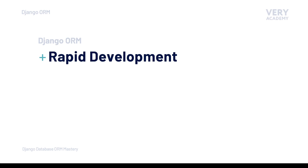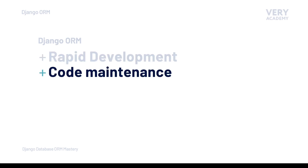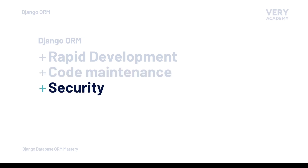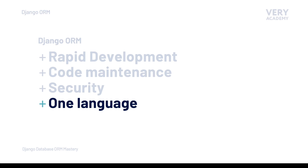Considering that the Django ORM allows the developer to remain in their primary programming language and manages aspects of database interaction, the Django ORM promotes development speed, code maintenance, security, and ease of development — since we only need to understand and learn one language. This list may seem abstract for new developers but will unfold as you learn more about the Django ORM throughout this course.